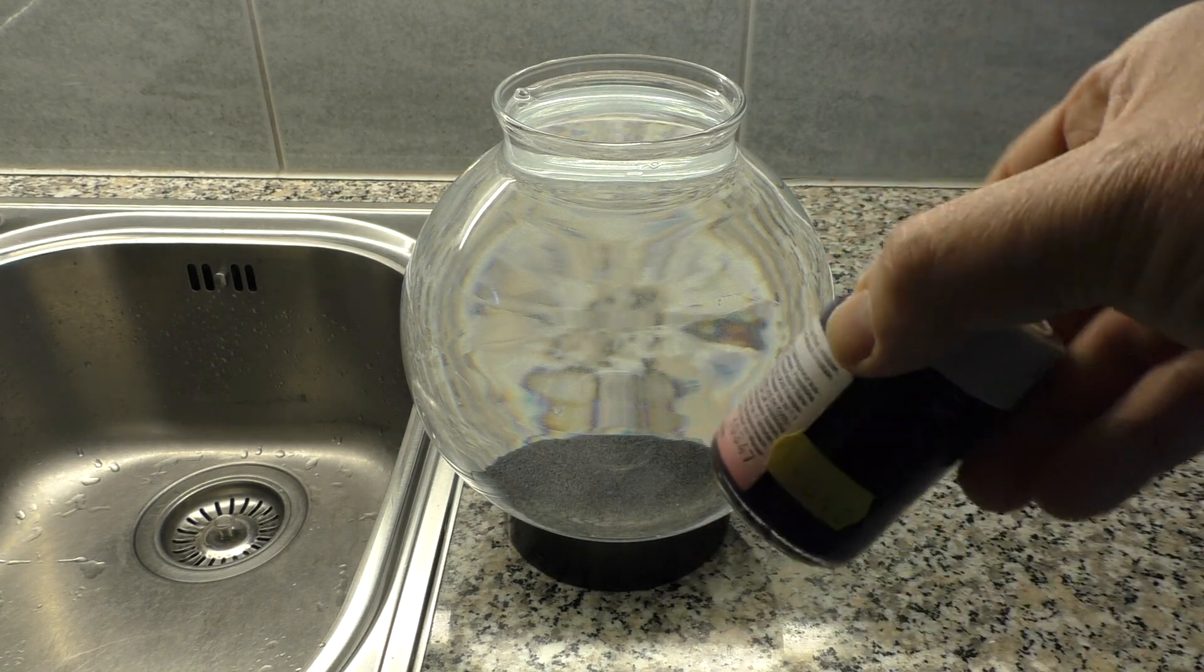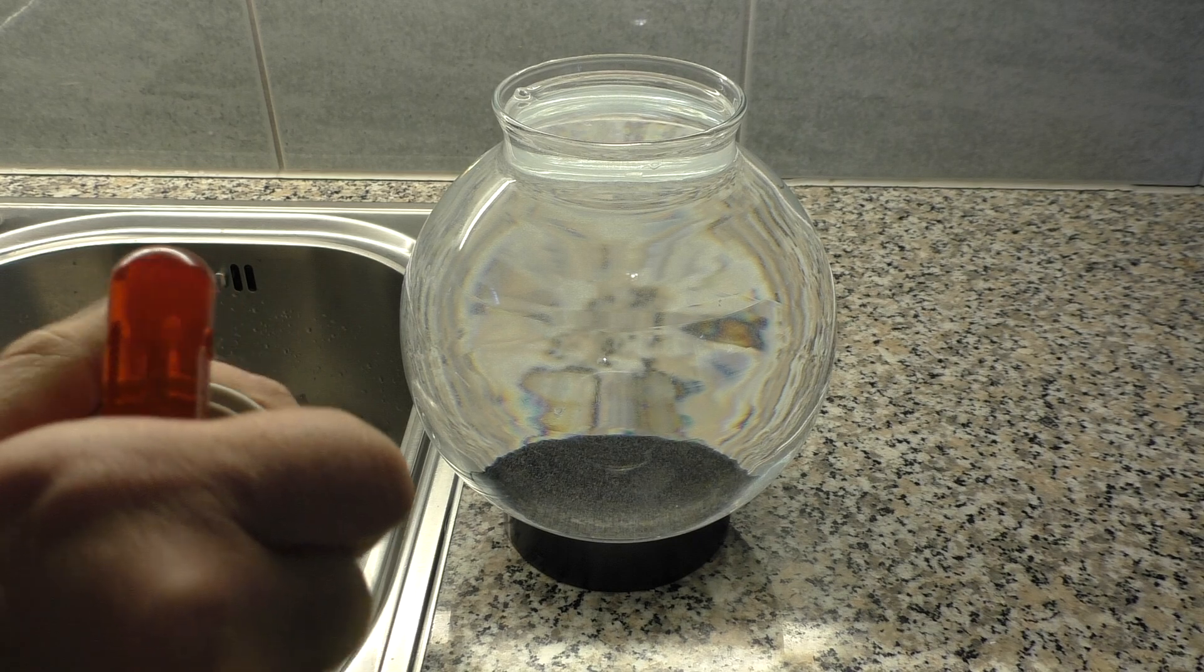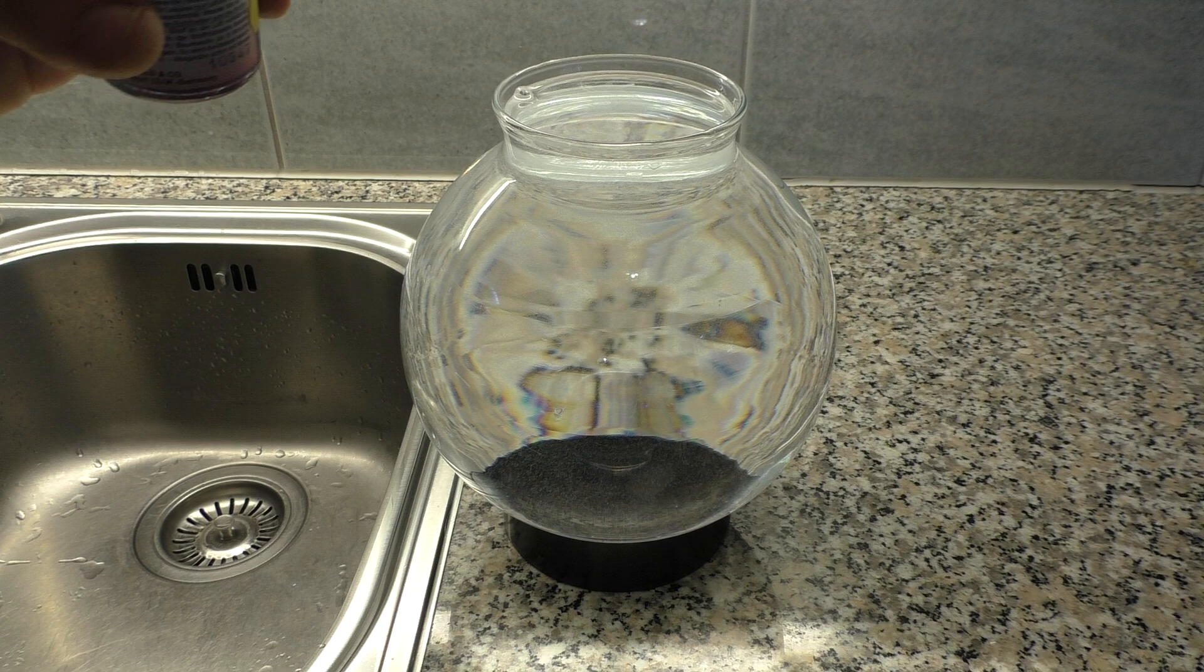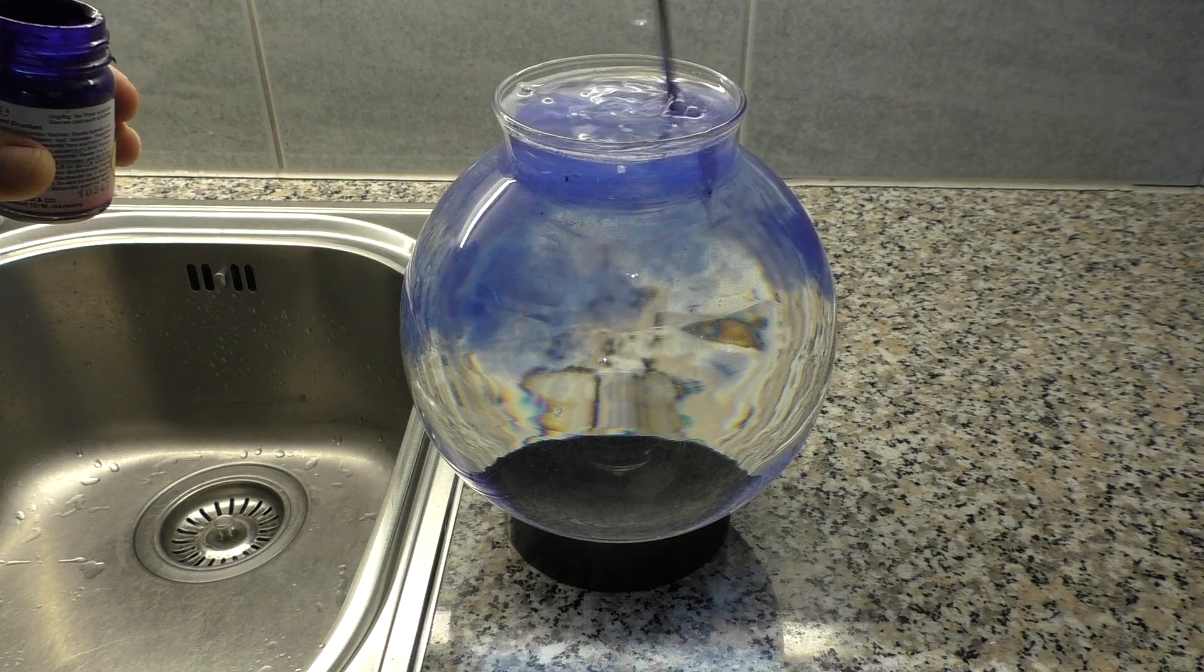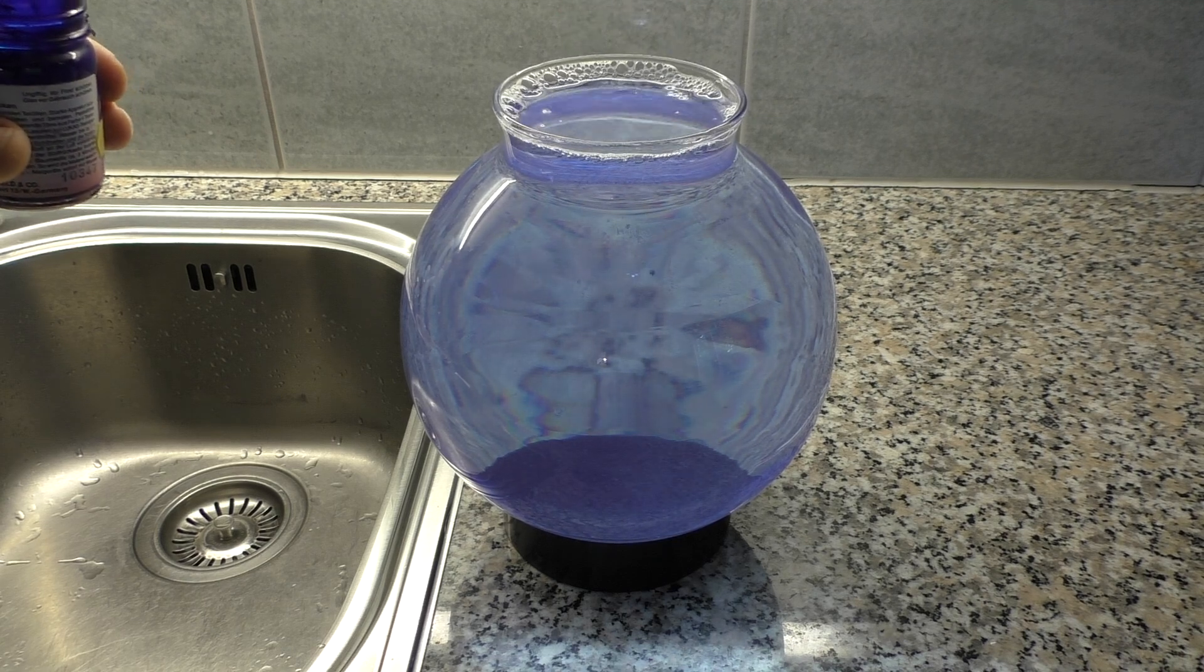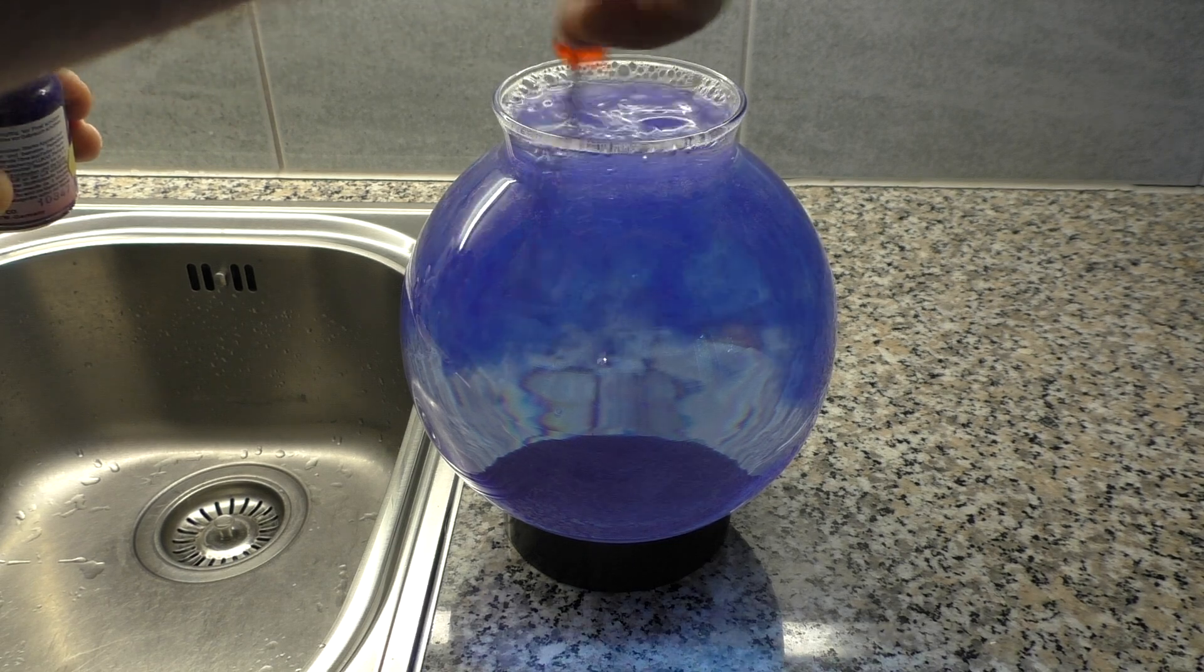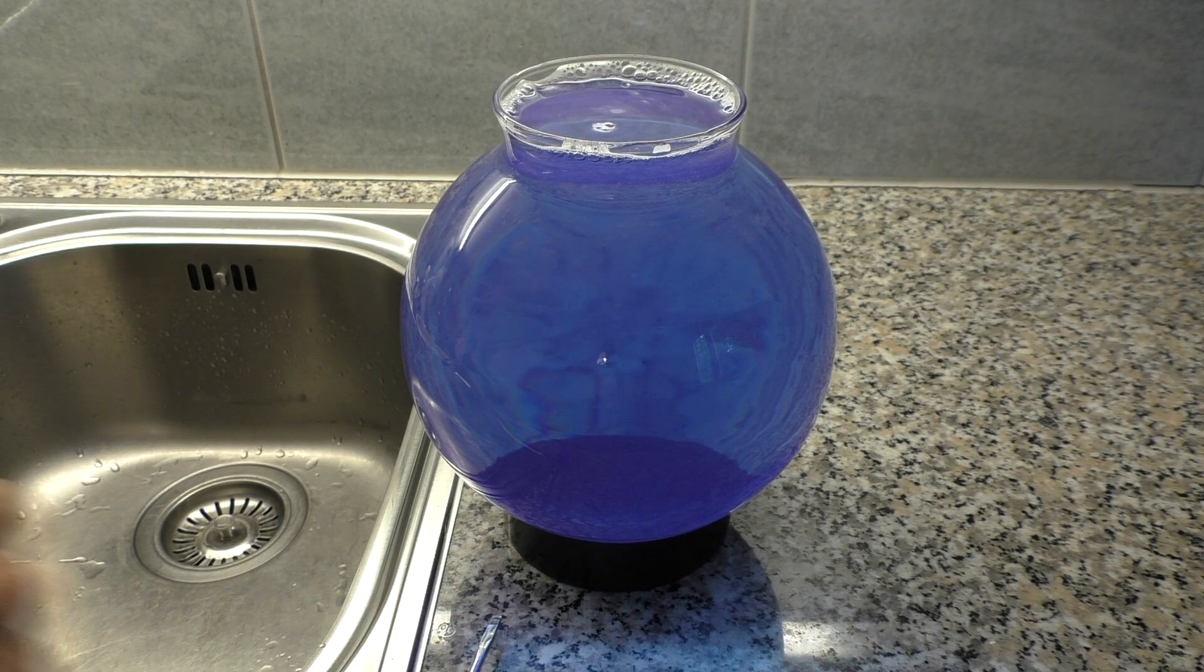Next one is blue paint. This one is t-shirt paint, but you can take everything that is soluble in water. So oil paint wouldn't work, but any water-based paint. I want it slightly blue. I would prefer to have a light blue for this, but I don't have that at the moment. That's enough. That's already nice and blue.